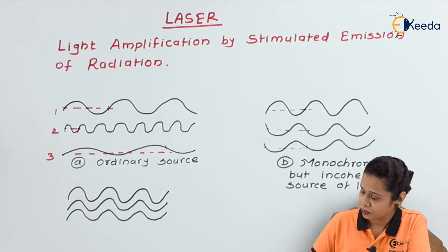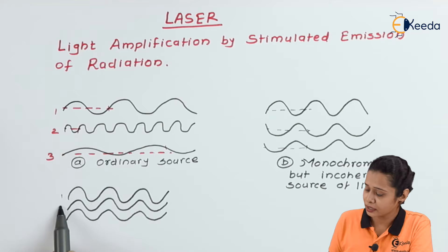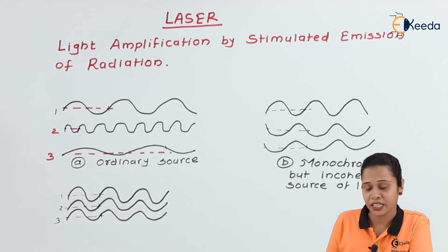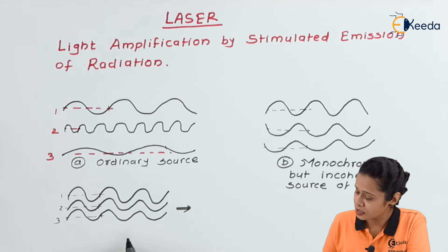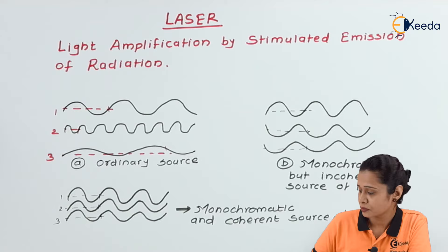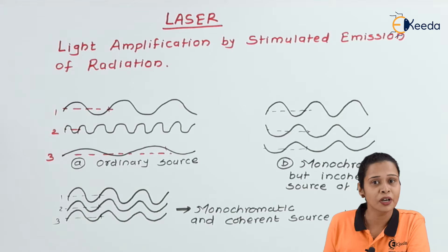Now look at the third diagram. In this third diagram we have again three rays. All three are traveling with the same phase as well as their wavelength is also the same. When the wavelength is the same it is monochromatic, and when there is no phase difference and all travel with the same phase it is coherent. So this is a monochromatic and coherent source of light.